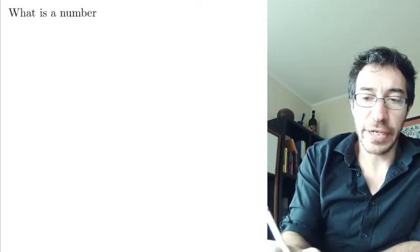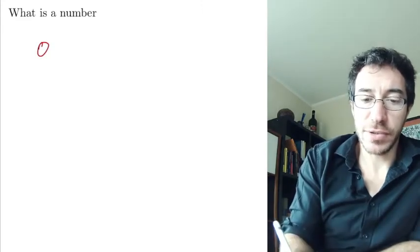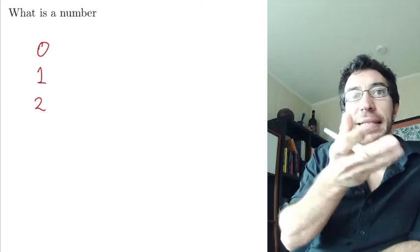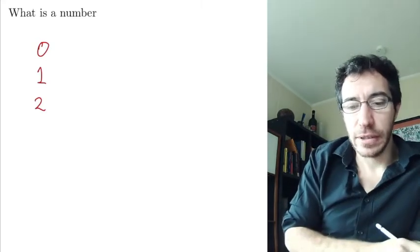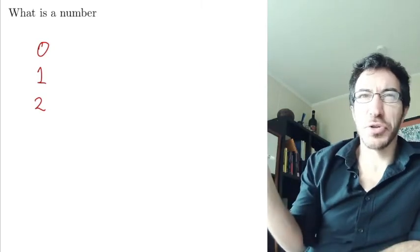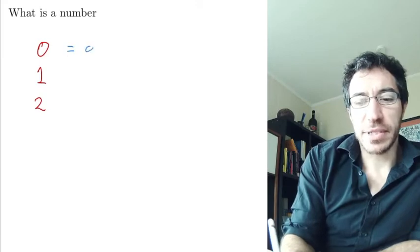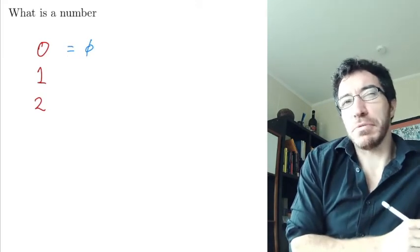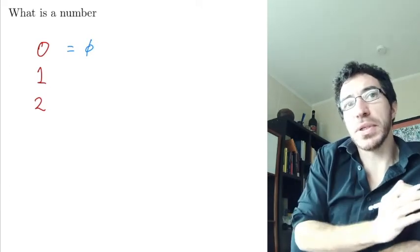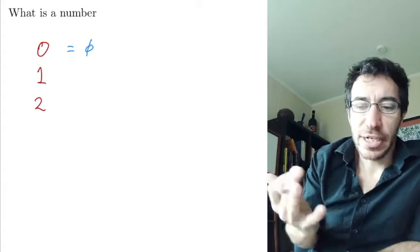We need to define essentially what zero is, what one is, what two is, and we need to do it in a way that we can identify who they are in a nice way. We just have to pick elements and give them names zero, one, two, three, and we want to do it in a way that is algebraically and combinatorially easy to work on.